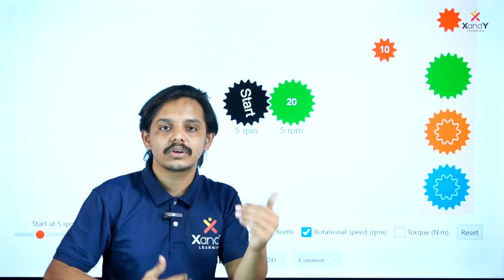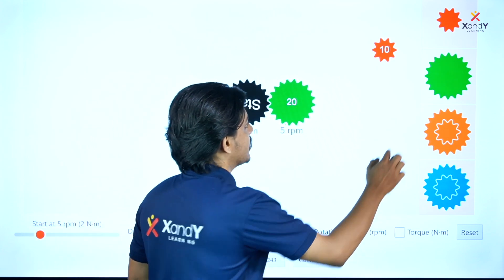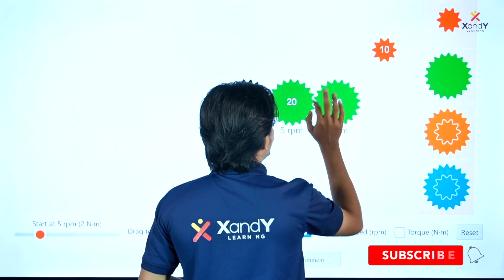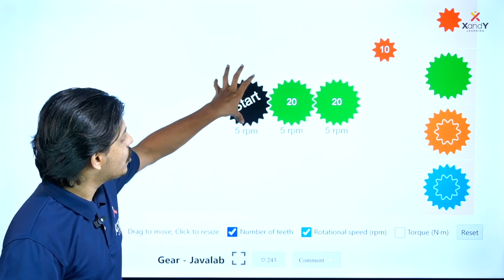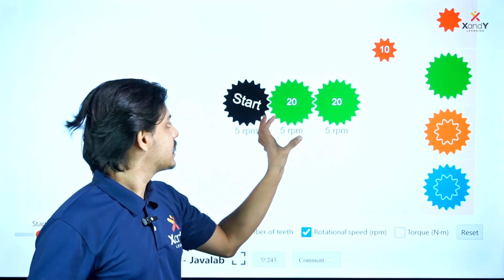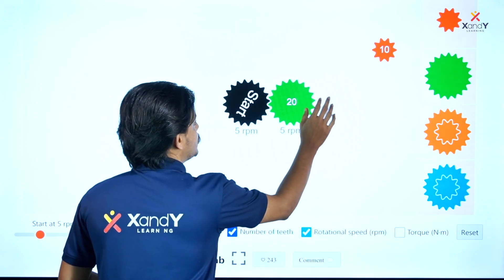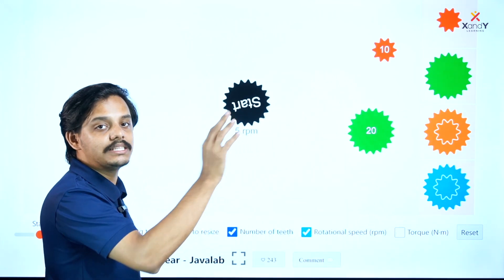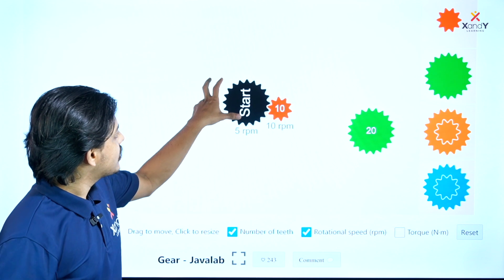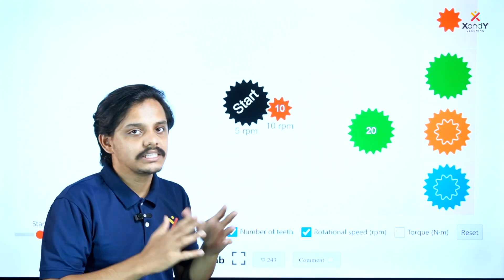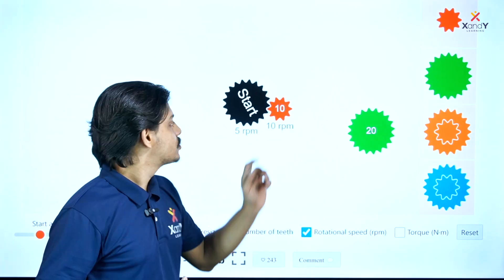Let's look at the rotation direction — clockwise or anti-clockwise. We are going to connect a 20-tooth gear and a 25-tooth gear. Gear one is clockwise; gear two is anti-clockwise. With 20 teeth on the small gear, the direction is anti-clockwise and the speed increases to 10 rotations per minute.